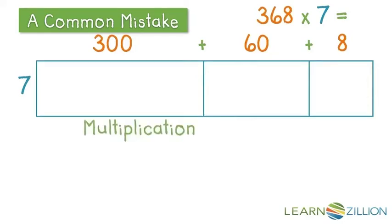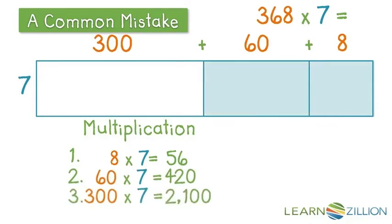This means that you'll be multiplying to find three products and then adding those three products together.